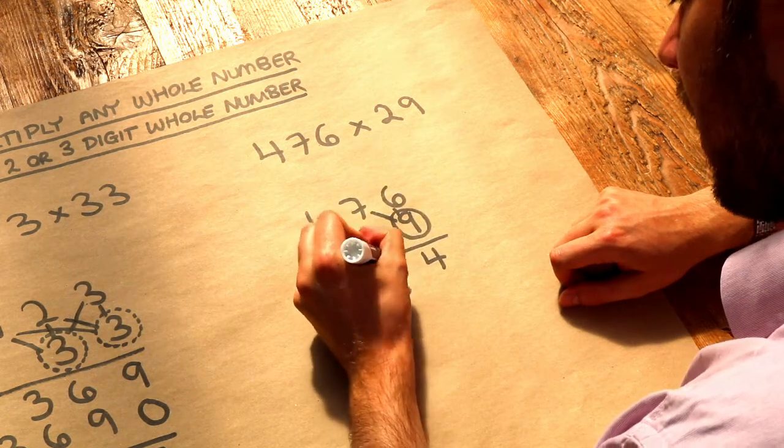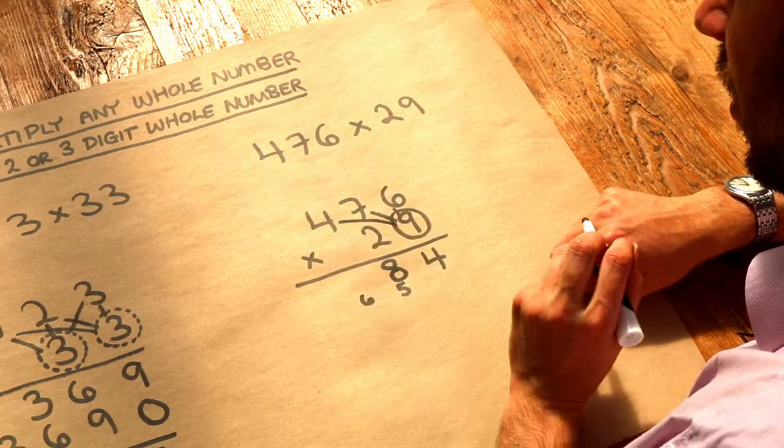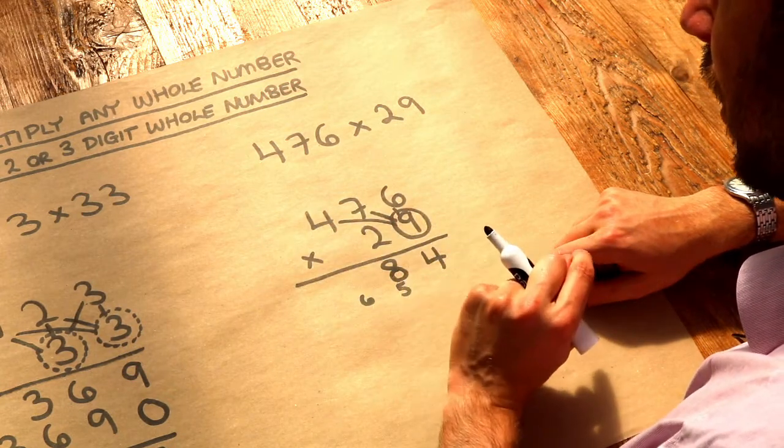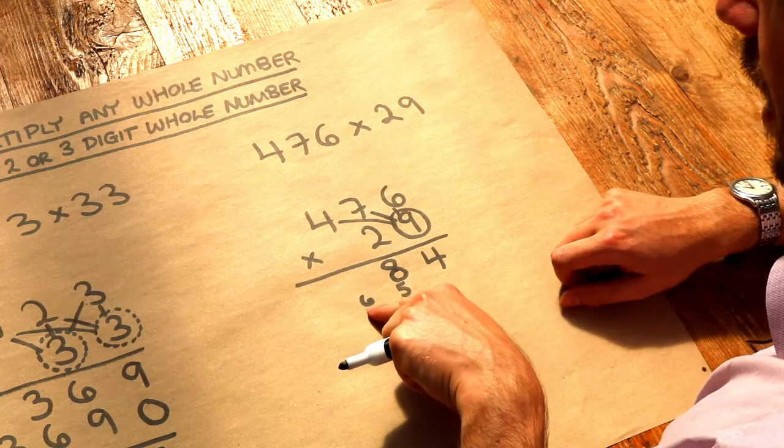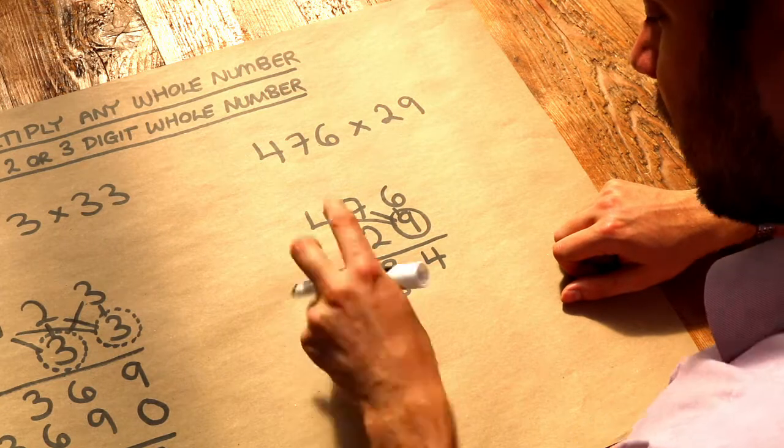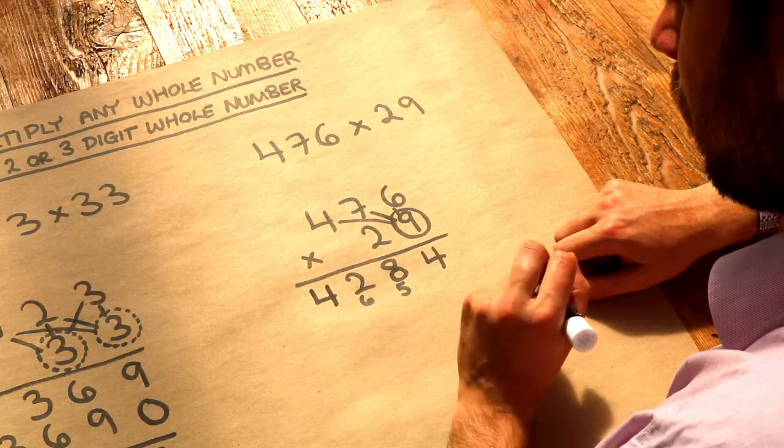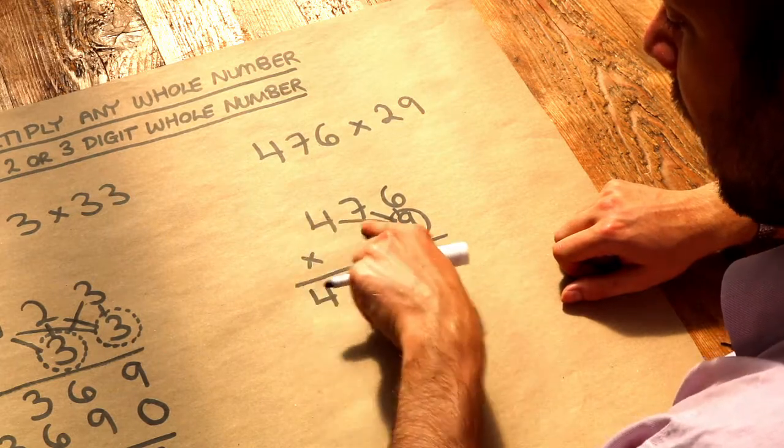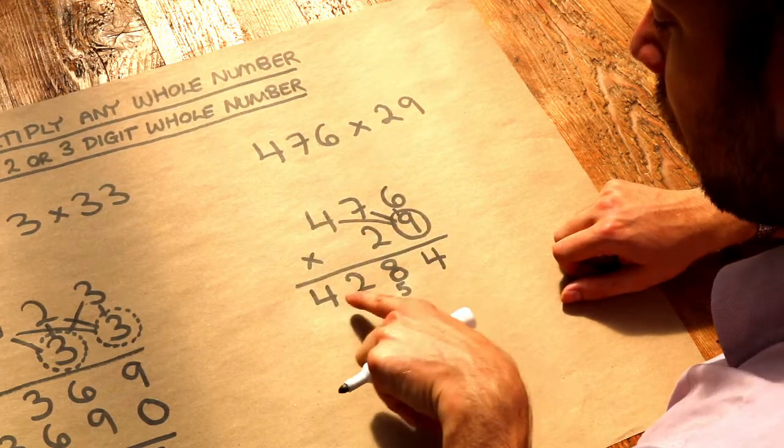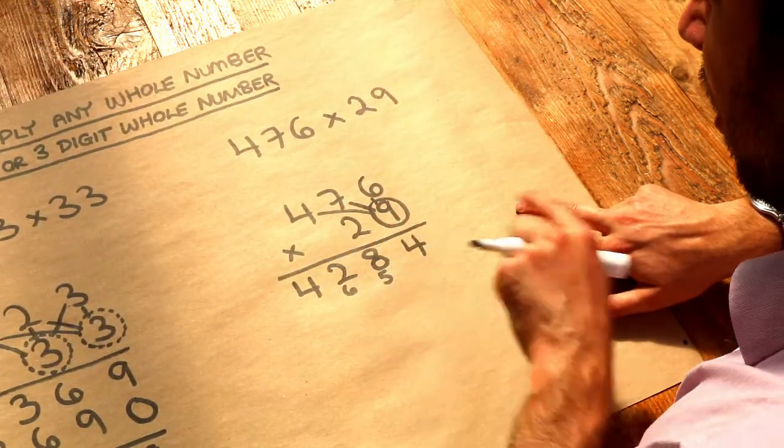So we put the units digit, eight, carry the six. And then we do four times nine. Four times nine is 36 plus the carried six is 42. So you put the two here and we haven't got anywhere left to put the carried four. So we just do four two eight four. So when we get to the end of the number we don't have any numbers to times by left, we just put the full number there. So that's 476 times nine.